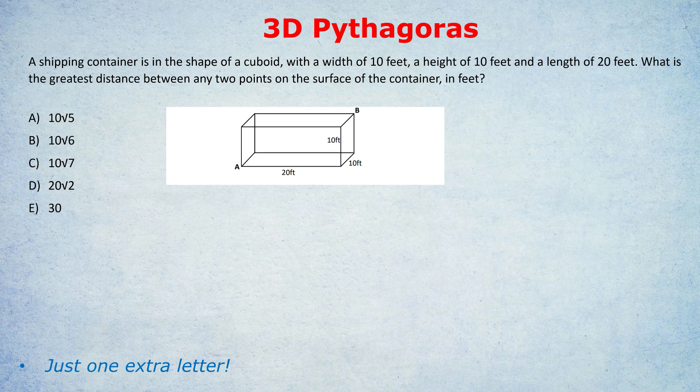Well, there are many points on the surface of the container, but the two that are going to be furthest apart are the two opposite corners, sometimes called vertices. A vertex is a corner, and if we look at the two furthest apart vertices, that would be A and B. Obviously you could pick another pair, but it would be that three-dimensional diagonal going right through the center of that cuboid.